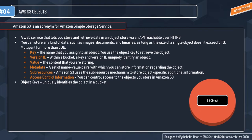The value is the actual content you are storing in the object. Metadata is a name-value pair with which you store information regarding the object. Sub-resources are also very important — Amazon S3 uses a sub-resource mechanism to store object-specific additional information. Sub-resources are always associated with some other entity such as an object or a bucket. There are two types: ACL and Torrent. When you create an object, the ACL identifies the object owner as having full control. The Torrent sub-resource returns the torrent file associated with a specific object — to retrieve it, you specify the torrent sub-resource in your GET request.